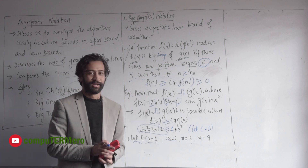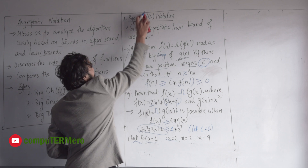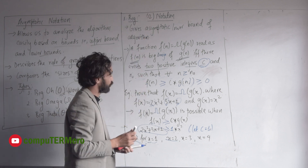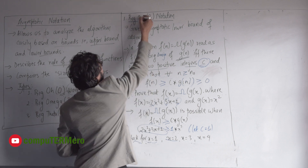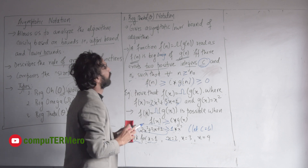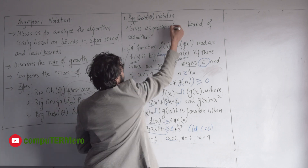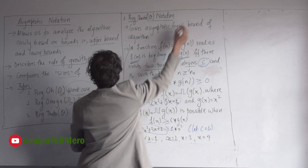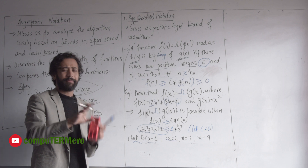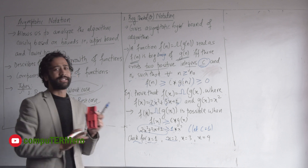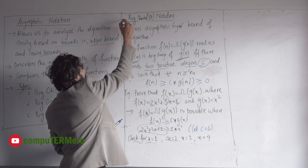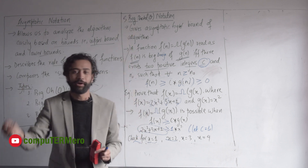I can prove that this is Big Theta. I will tell you about this concept. Big Theta is a tight bound. It covers average case, worst case, and best case.